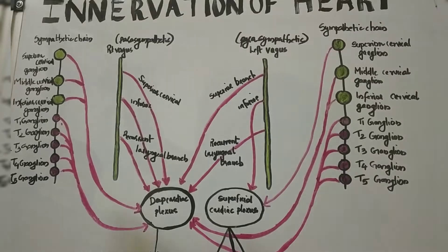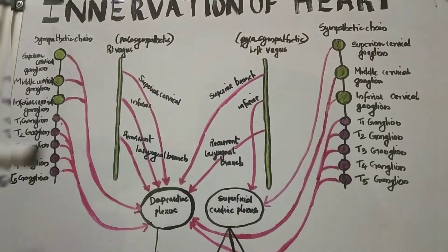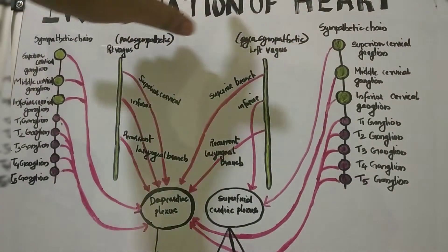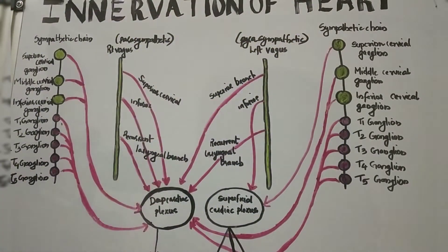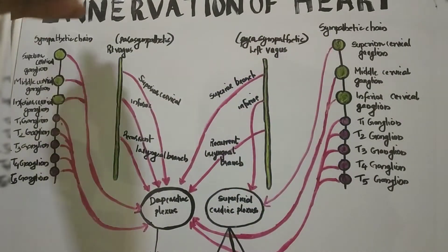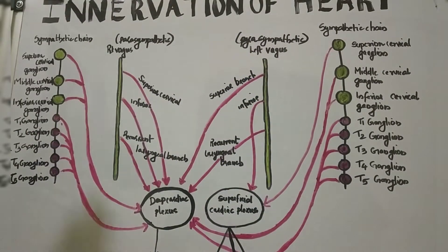In this video, we will discuss about the innervation of the heart. Innervation means nerve supply. The heart has got both parasympathetic and sympathetic nerve supply.